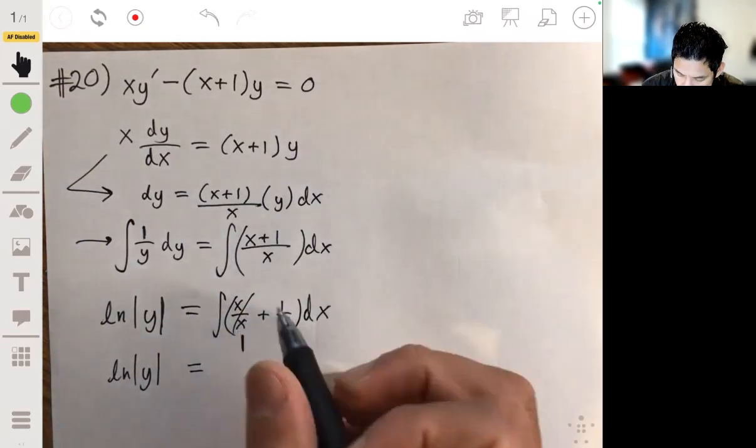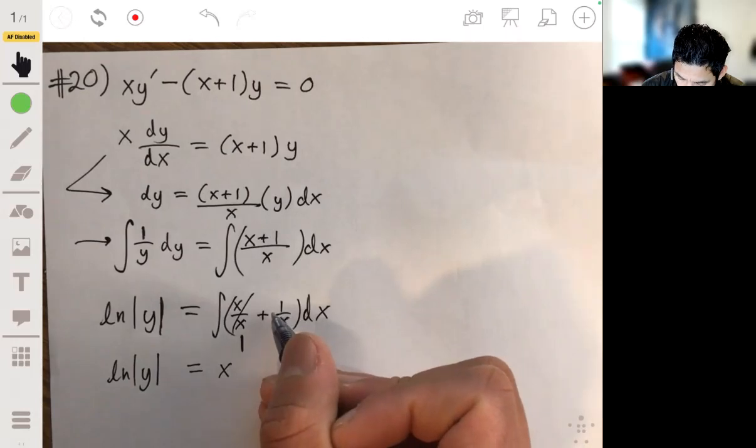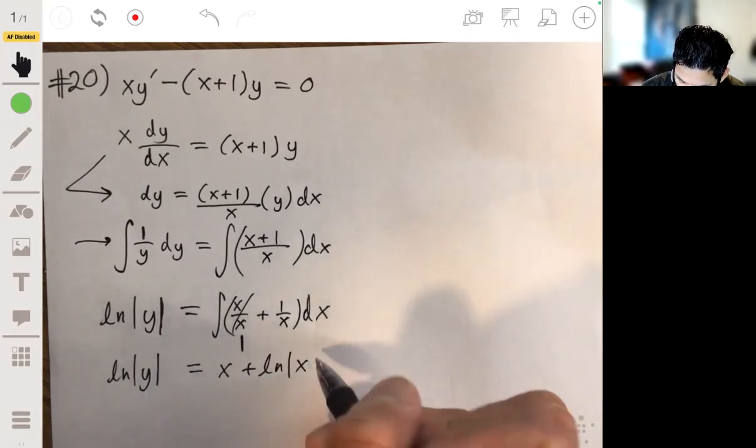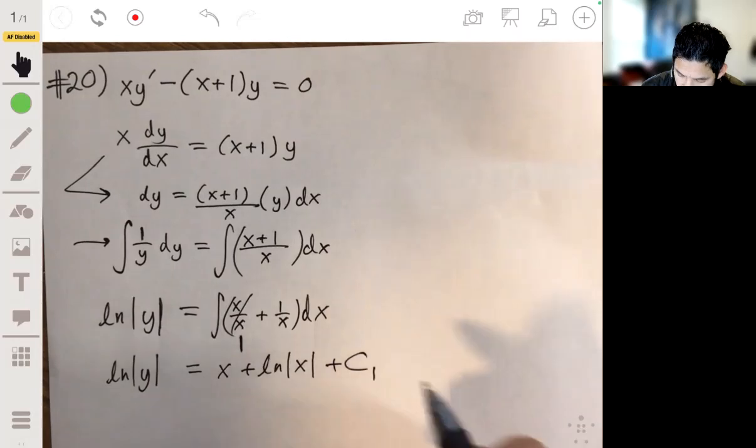So the integral of 1 is just x, integral of 1 over x, natural log of the absolute value of x plus your constant c1.